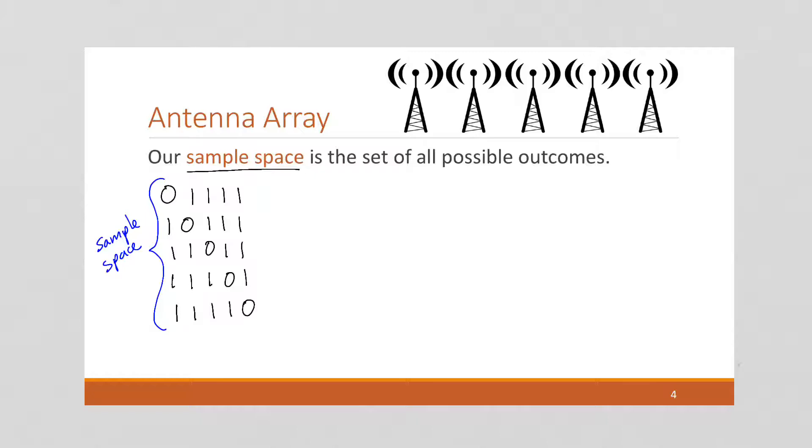And it lays out every possible option, given that exactly one antenna is broken. So we want to find the probability of the event where the array is functional. Okay, and again, this notion, this idea, the event where the array is functional, this is called the event. We're going to call it E. The sample space is often called S.